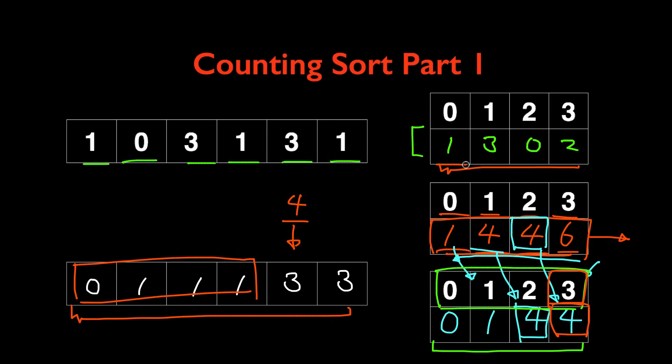There is one occurrence of 0, 3 occurrences of 1, and 0 occurrences of 2. So adding them up there are four items that should appear before the number 3 and that's why the starting index for the number 3 is 4.